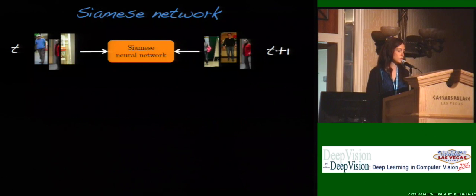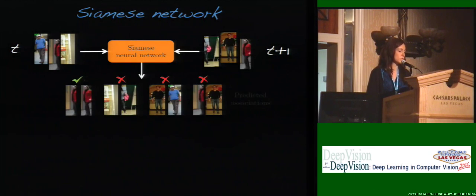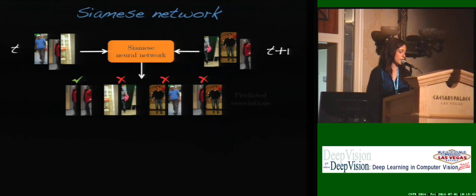To do this we use a Siamese network. We have some detections in frame t and some detections at frame t plus one; we feed them into the network, which tells us which belong together and which do not. This also has the great advantage that it can identify false detections, because none of them will be matched to any trajectory.